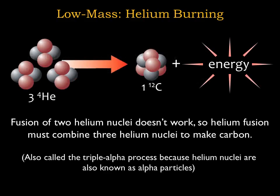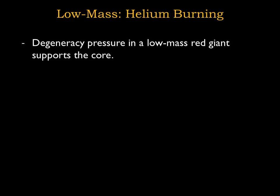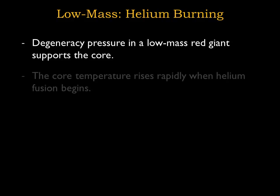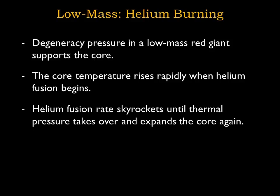The helium fusion process converts three helium nuclei into one carbon nucleus. Energy is released because the carbon-12 nucleus has a slightly lower mass than the three helium-4 nuclei. There is one unusual thing about helium fusion in low mass stars like the sun: the main pressure in the inert helium core is degeneracy pressure — the same unusual type of pressure that supports brown dwarfs. Degeneracy pressure does not increase with temperature, so when helium fusion begins, the core temperature will rise rapidly and the core can't expand to compensate.